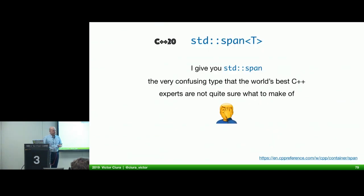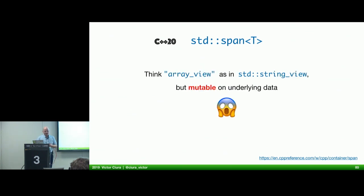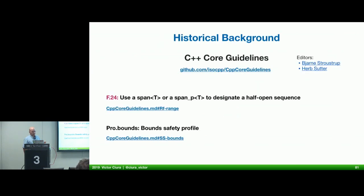And we get to span. Span is a very confusing type that even the world's best C++ experts aren't quite sure what to make of — and we're going to see why. Think of span as an array view: similar to StringView, but the underlying data is mutable. This is a big difference, and we'll have to go to its historical background.